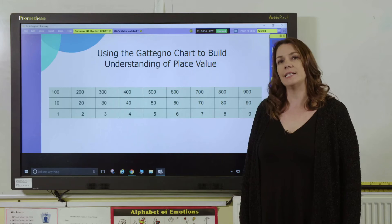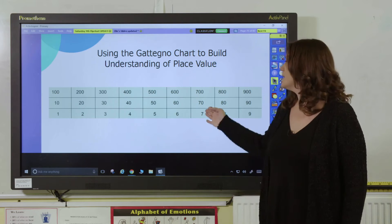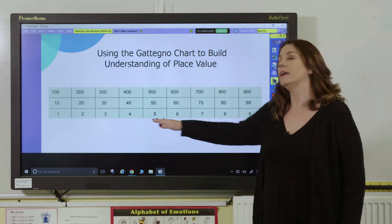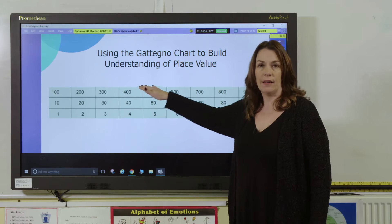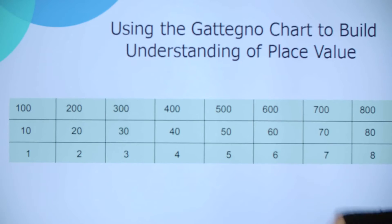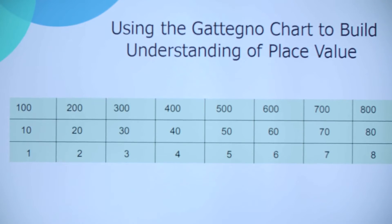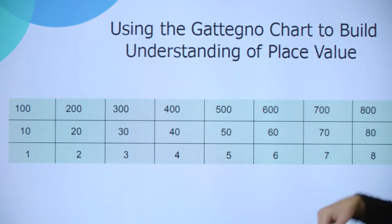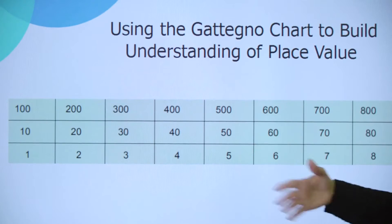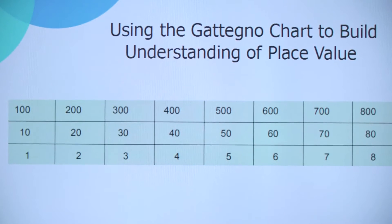Hi, I'm Rebecca and in this film we're going to look at how we can use the Gattegno chart to build understanding in place value. A Gattegno chart looks like this. It has ones along the bottom, then tens, then hundreds. It can be extended to go up into thousands and tens of thousands and further, or it can go down into decimal numbers.